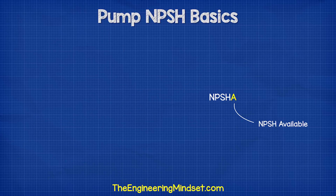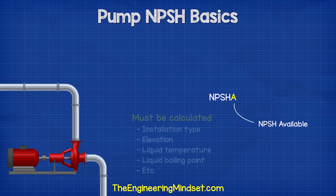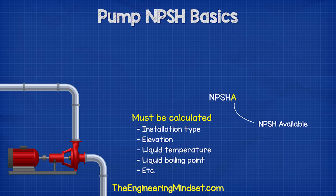The other letter is the A, and this is the NPSH available. This depends on the installation of the pump and needs to be calculated. It considers things such as installation type, elevation, liquid temperature, liquid boiling point, et cetera.